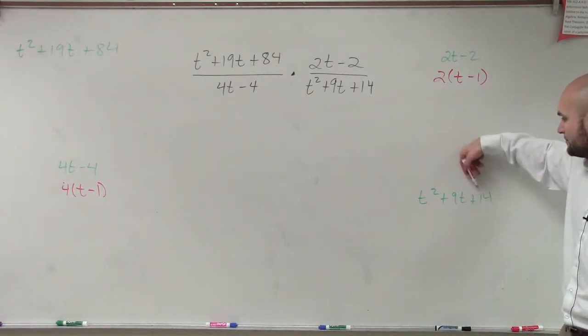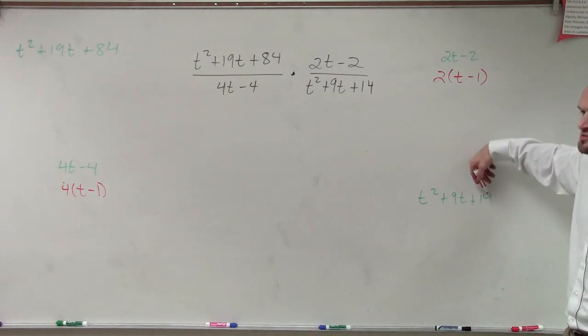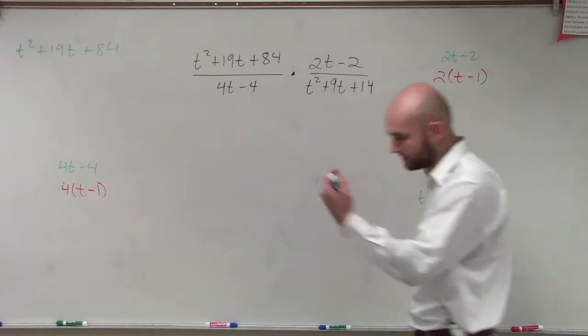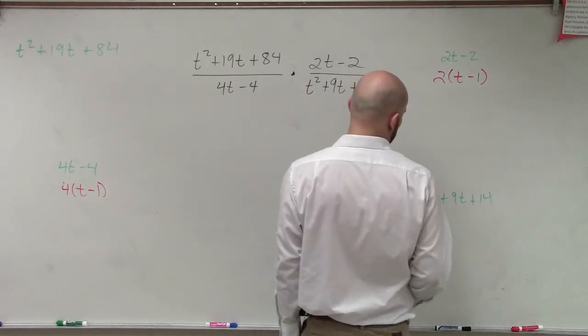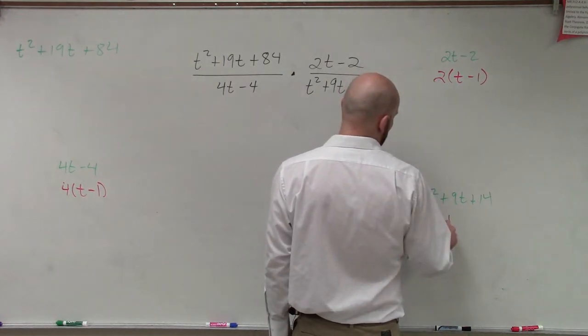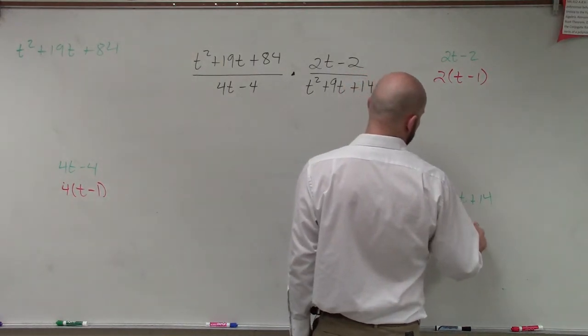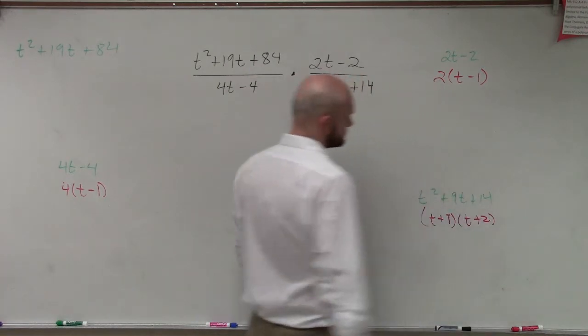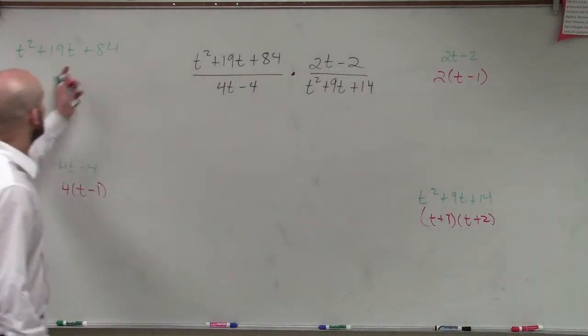Now, let's go ahead and let's factor this one. What two numbers multiply to give me 14, but then add to give me 9? 7 and 2. So I can rewrite this one as t plus 7 times t plus 2.